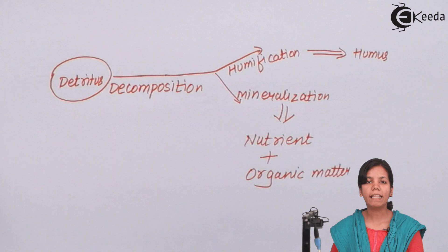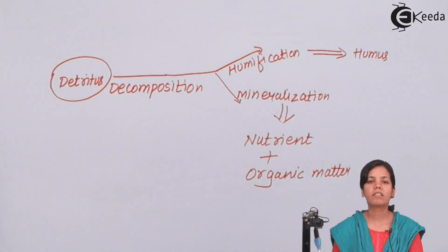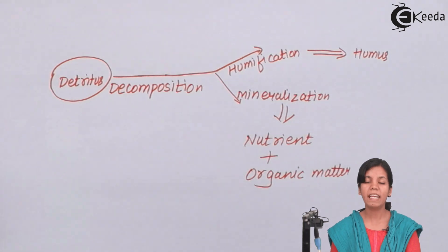Students, in this part of the chapter we have studied about decomposition, the various steps of decomposition, and how humus or nutrients are formed inside soil which makes soils more viable, more rich in compounds. I hope the topic of decomposition in ecosystem is clear to all of you. Thank you.